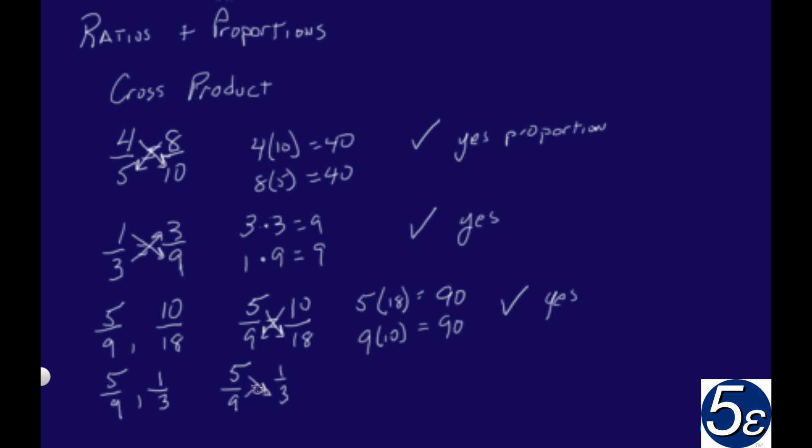We do our multiplication this way. We end up with 9 times 1, which equals 9. We end up with 5 times 3 on the other diagonal, which equals 15. And the answer is no, this is not a proportion.